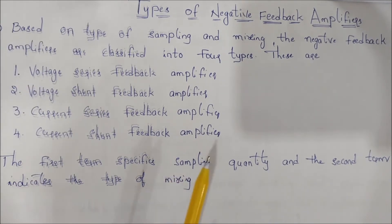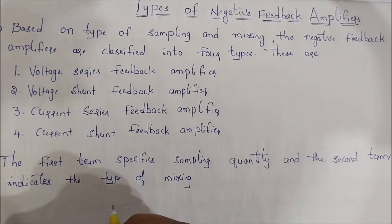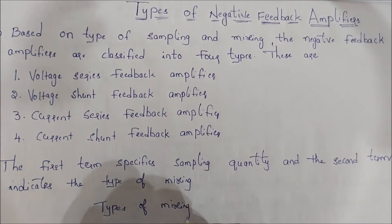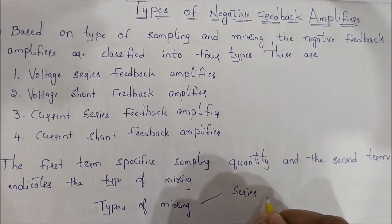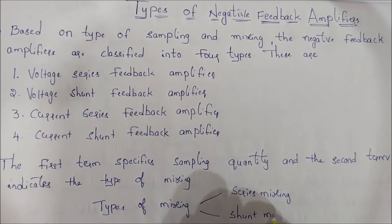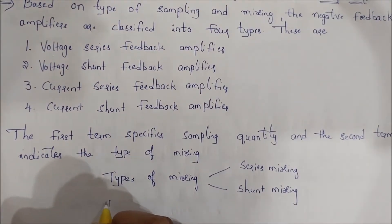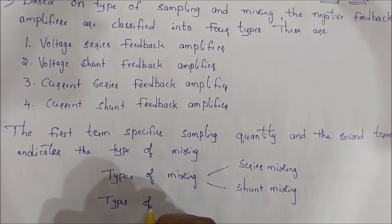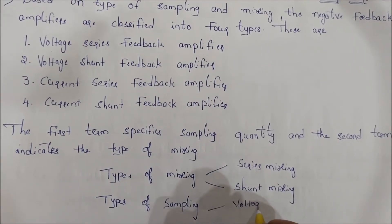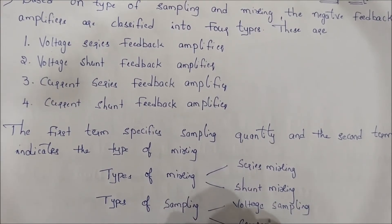From the block diagram of the feedback amplifier, there are two types of mixing: series mixing and shunt mixing. There are also two types of sampling: voltage sampling and current sampling.